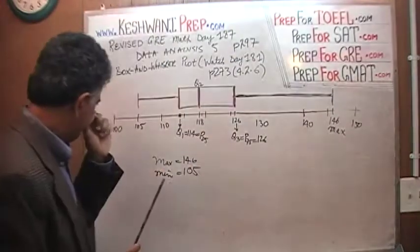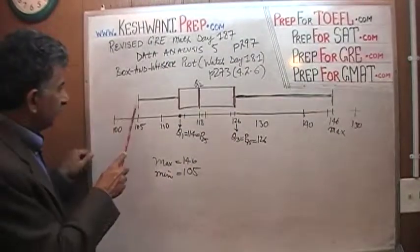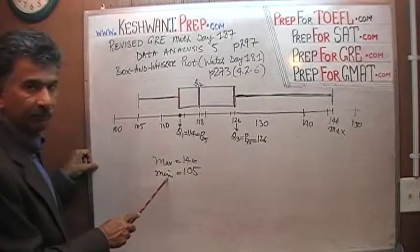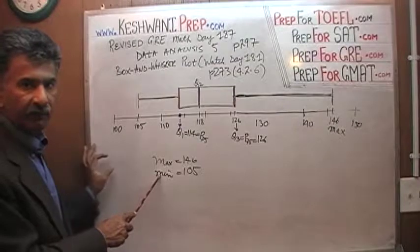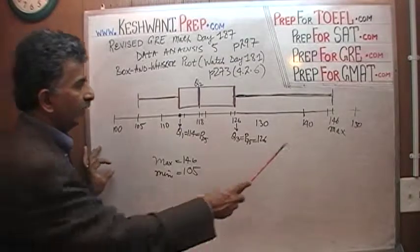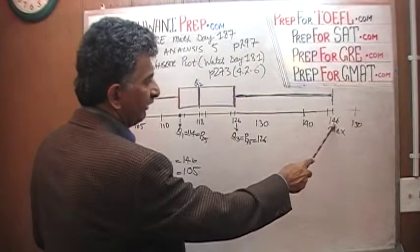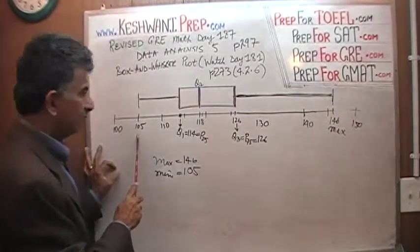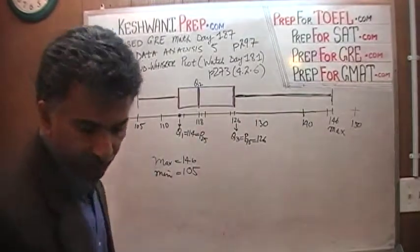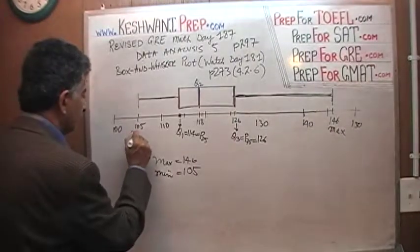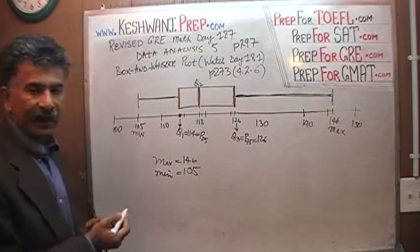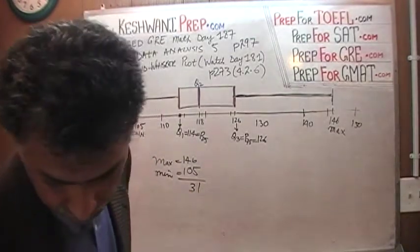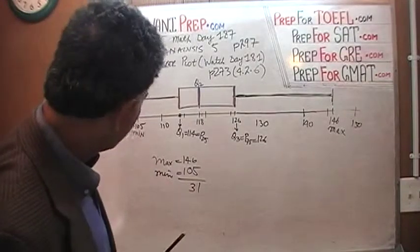The story begins at 105 — the line begins at 105, so 105 is our minimum, the lowest observation. It ends all the way up at 146, which is the maximum. Since we know the minimum and the maximum, we can find the range, which is the very first thing they ask for. The range is 41.